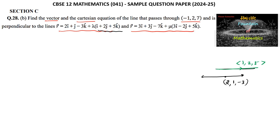And another line, passing through the point (3, 3, -7), and having the direction ratios 3, -2, 5.